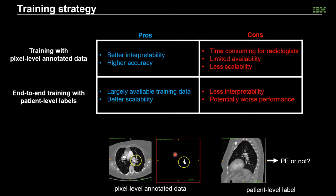Basically, a network can be trained with pixel-level annotated data or patient-level labels. Training with pixel-level annotated data has the benefit of providing better interpretability of the network with higher accuracy. However, data annotation is quite time-consuming for radiologists. Therefore, the annotated data are often limited, and because of this, those networks often have sub-optimal scalability.